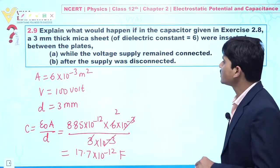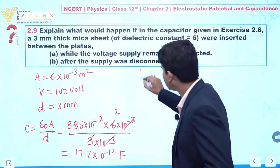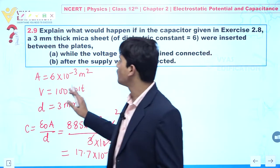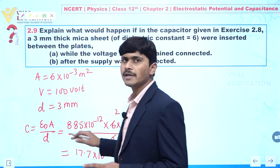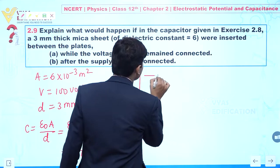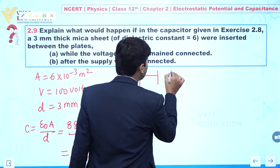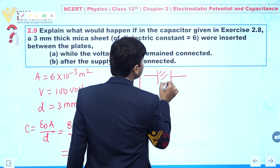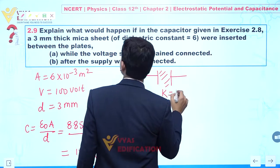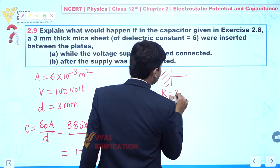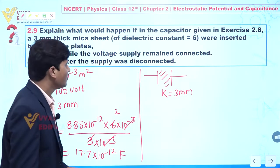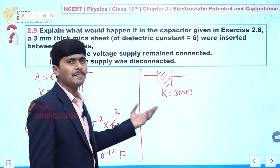Now, in this question, it is given that if we insert a mica sheet having thickness 3 mm between the parallel plate capacitor — let's suppose this is a parallel plate capacitor and we introduce a thick mica sheet of 3 mm — what will happen?